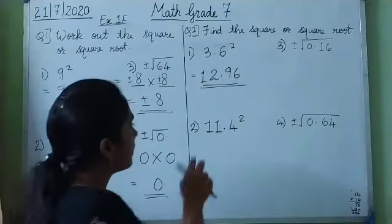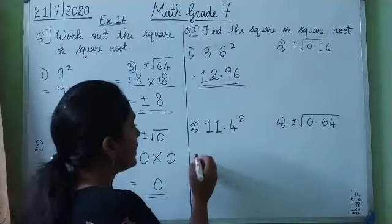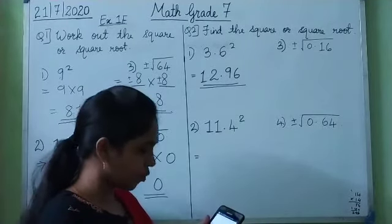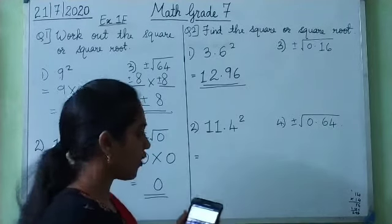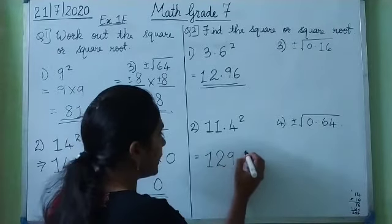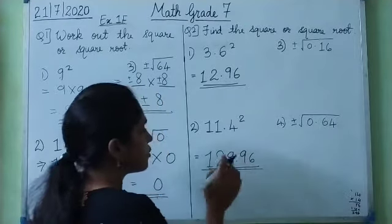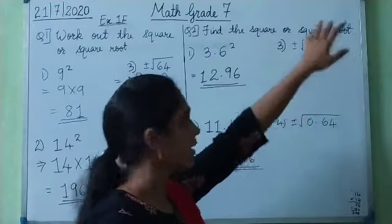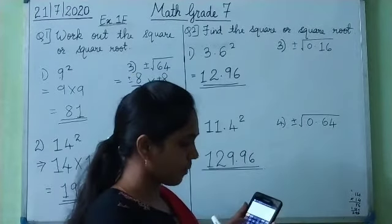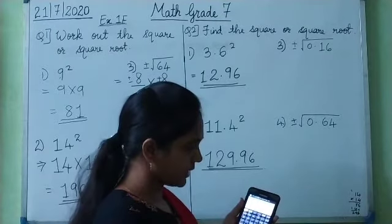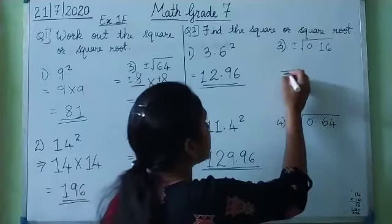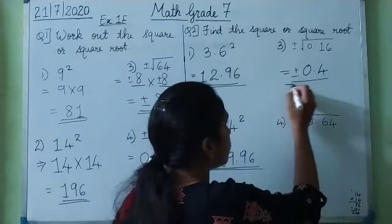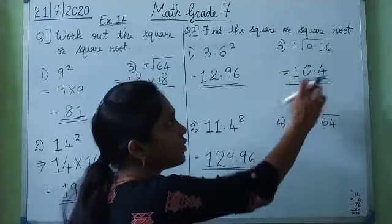Now the second: 11.4 squared. I press 11.4 and then the square key. The result is 129.96. So this is the square of 11.4. Now for the third question, I have to find the square root of 0.16. The square root of 0.16 is 0.4. But this is again positive or negative, so I write plus or minus 0.4. The square root of plus or minus 0.16 is plus or minus 0.4.